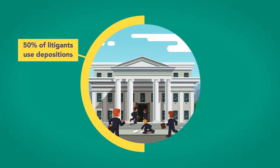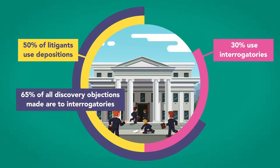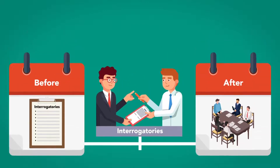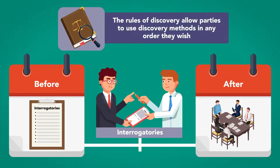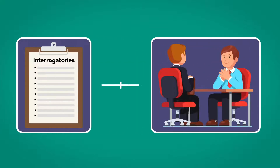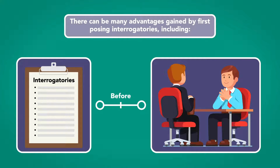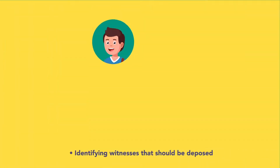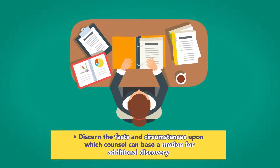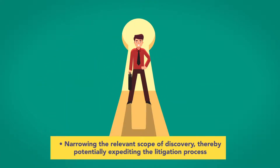Historically, while roughly 50% of litigants use depositions, only 30% use interrogatories, although 65% of all discovery objections made are to interrogatories, whereas only approximately 26% are to depositions. Whether interrogatories should be posed before or after depositions is a strategic decision dependent on the case. The rules of discovery allow parties to use discovery methods in any order they wish. While it is most common for attorneys to depose witnesses first, some attorneys may wish to use interrogatories before taking depositions. Advantages include identifying witnesses that should be deposed, forcing opposing counsel to disclose witnesses they will use at trial, discerning facts and circumstances upon which counsel can base a motion for additional discovery, and narrowing the relevant scope of discovery, thereby potentially expediting the litigation process.